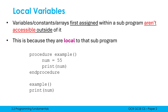Here is a dummy example — a pointless subprogram, a calling line, and an extra print. What is going to happen when I run this code? We run it top to bottom. Definitions get ignored initially, so the first proper line to run is this example line — example brackets. This is calling our procedure, so it jumps up, assigns num to be 55, and prints num, so you would get 55 on screen.